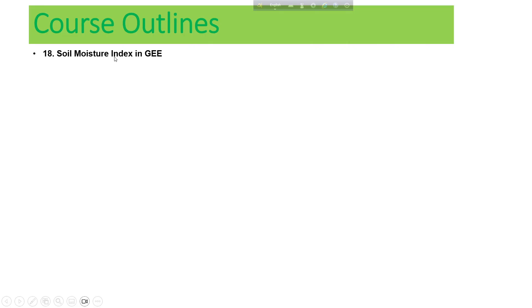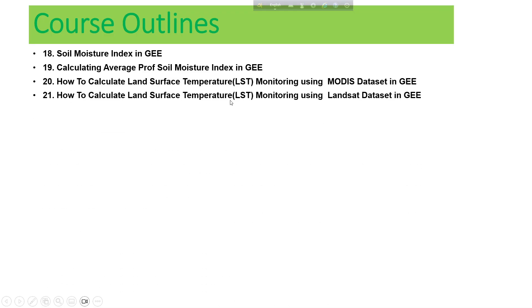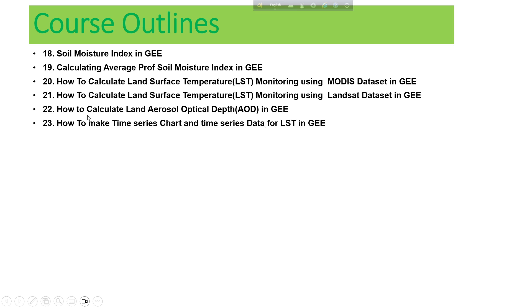We also learn Soil Moisture Index (SMI) using different datasets in Google Earth Engine, including calculating the average soil moisture index. We learn how to calculate Land Surface Temperature (LST) using Landsat satellite imagery. We also learn how to calculate Aerosol Optical Depth (AOD) using Google Earth Engine, and how to make time series charts and time series data for LST.